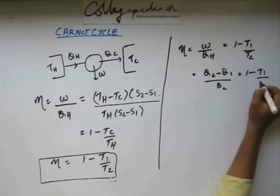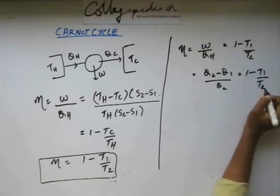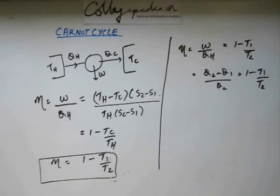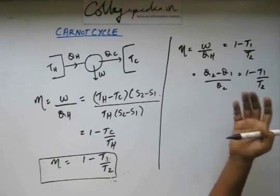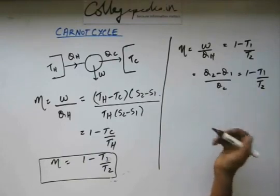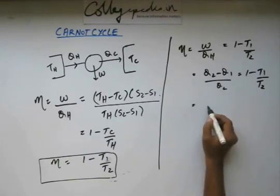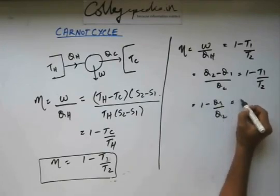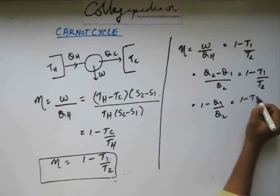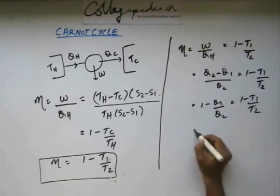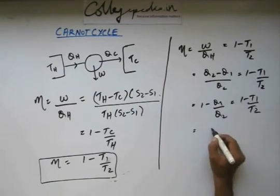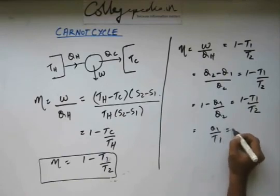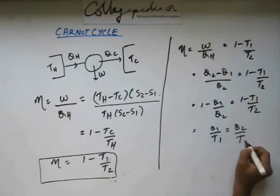Generally we will see subscript 1, 2 rather than H and C. From here you can see that 1 minus Q1 by Q2 is equal to 1 minus T1 by T2. The 1s get cancelled and you see that Q1 by T1 is equal to Q2 by T2.